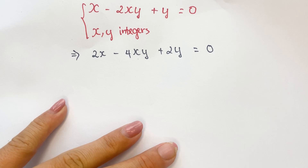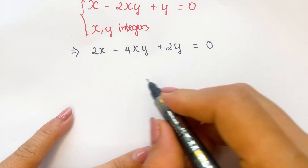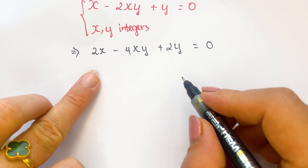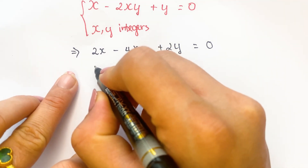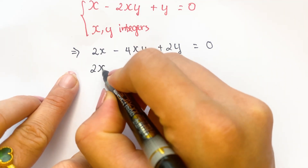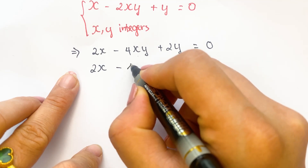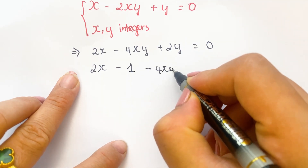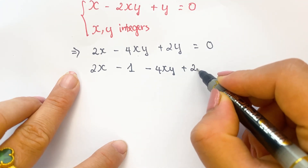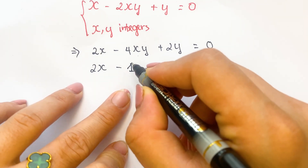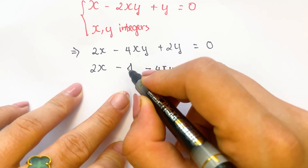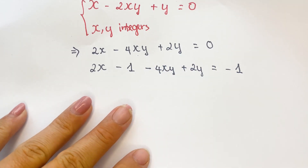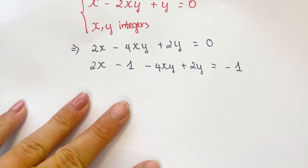And then, you can add minus 1 to both sides. Therefore, we can have 2x minus 1, minus 4xy plus 2y equals minus 1 — when you add minus 1 on the left-hand side, you need to add minus 1 on the right-hand side.